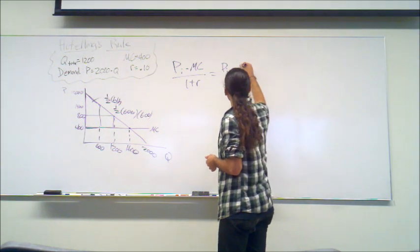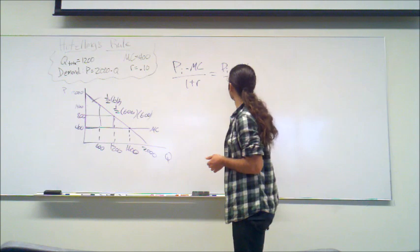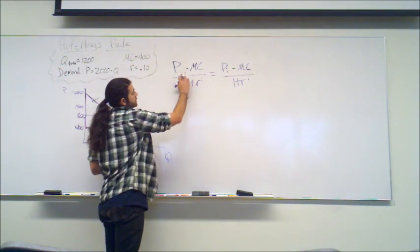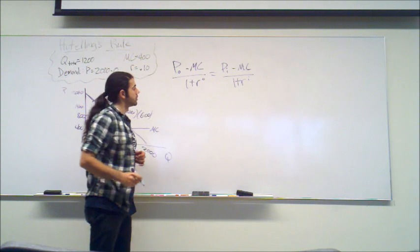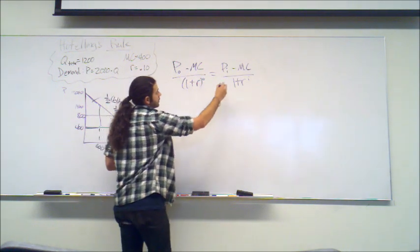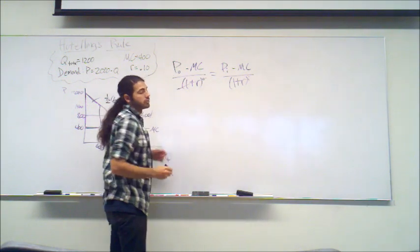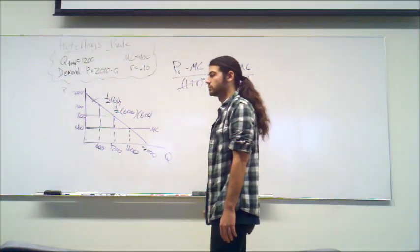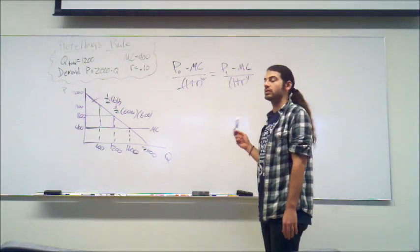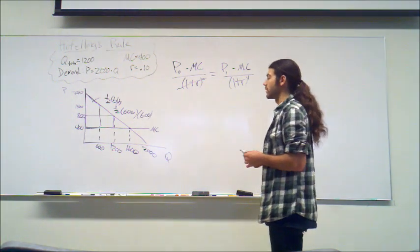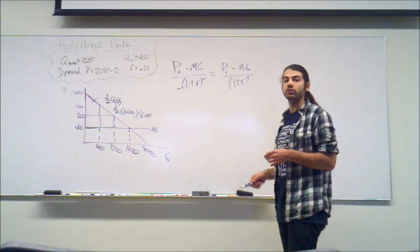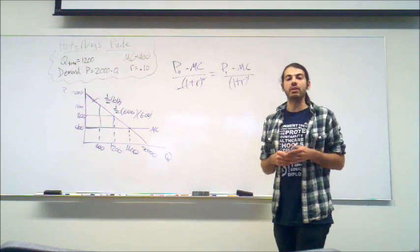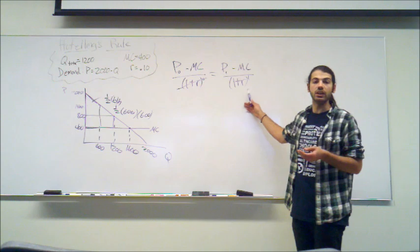We're going to do this in two periods — period 0 and period 1. For period 0, the exponent disappears because anything to the 0 power equals 1, so it just becomes 1 plus R. The price is going to increase over time to maximize the value of the resource for the producer. In a future period, the money you receive is discounted, so for that future money to equal present money, the price has to increase based on the discount rate. That's what Hotelling's Rule states.